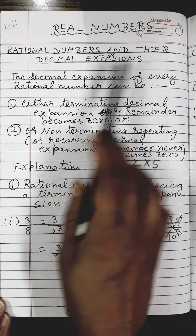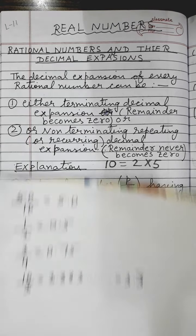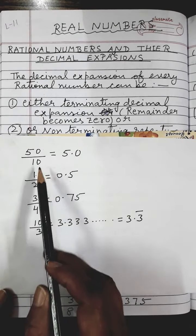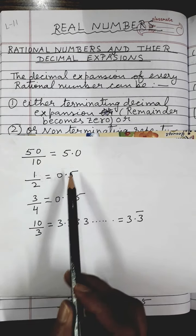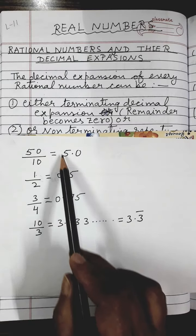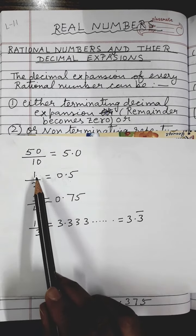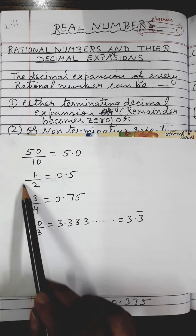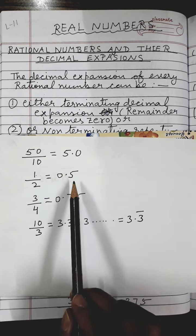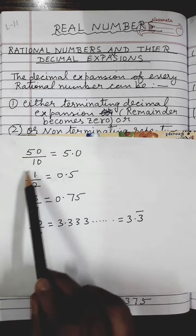Now what is the meaning of rational numbers and their decimal expansion? Understand with the help of this example. Look at this rational number 50 upon 10 — if I divide 50 by 10, I will get the answer as 5. So this 5.0 is called the decimal expansion of rational number 50 upon 10. Similarly if I divide 1 upon 2, which is a rational number, I will get the answer as 0.5. So 0.5 is called the decimal expansion of rational number 1 upon 2.